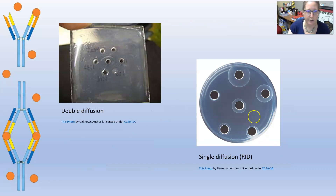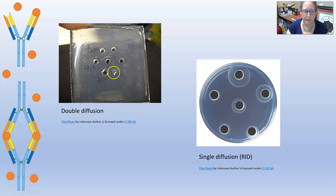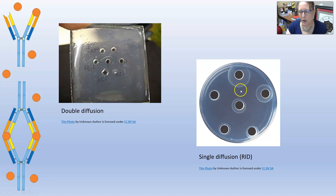I have a couple of illustrations here. This would be the double diffusion — you would put the sample in here with the antibody, and you would have different concentrations of the antigen to find the titer, and you will see a band forming there. The single diffusion shows different circles of precipitation. Comparing all of them, this one would have the least concentration, and this one would have the highest concentration because it has the highest zone of precipitation.